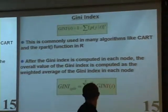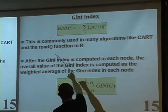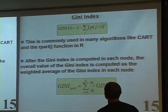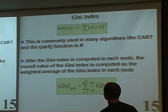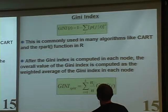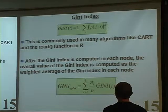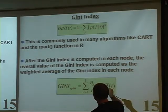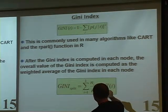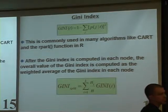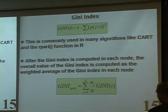Gini index is what gets used in R's rpart, because rpart is based on the CART algorithm which suggests using Gini index. For two classes, Gini index turns out to be proportional to the binomial variance. After computing it in each node, you take the weighted average to get the overall Gini index.